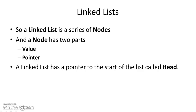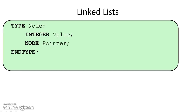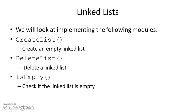Each node in the list has a value and a pointer. The linked list also has a pointer called head that points to the start of the list, and we know we've reached the end when we reach null. We declare a node by defining a type called node with an integer value and a pointer of type node — this is a recursive definition where the pointer points to another node.